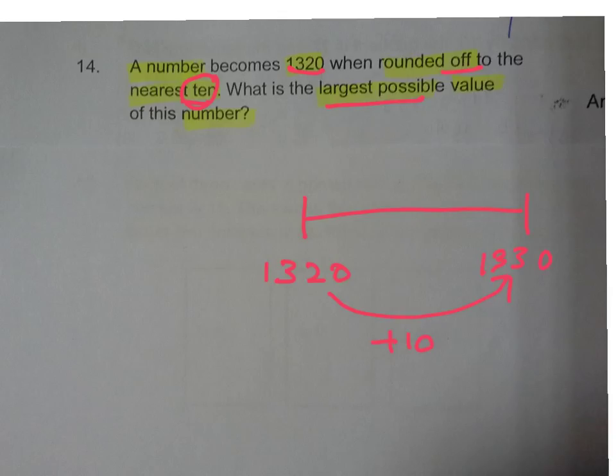Now, my number, when we round off to the nearest tenths will give us 1330, it will be 1325.